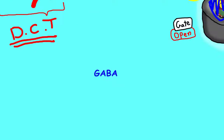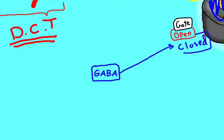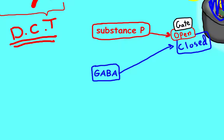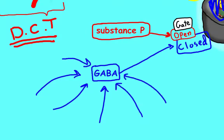GABA analogs like pregabalin and Lyrica are used for cases of chronic pain to block pain signals from reaching the higher centers, promoting a feeling of well-being.